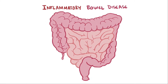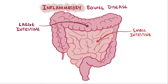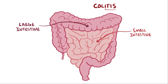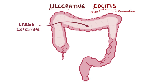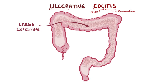Inflammatory bowel disease can cause inflammation in the small and large intestine — in other words, inflammation of the bowel. Colitis refers specifically to inflammation in the colon, or the large intestine. Ulcerative colitis is a type of inflammatory bowel disease that tends to form ulcers along the inner surface or lumen of the large intestine, including both the colon and the rectum.